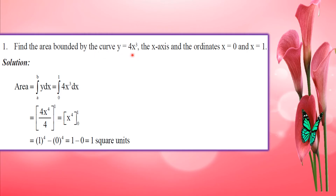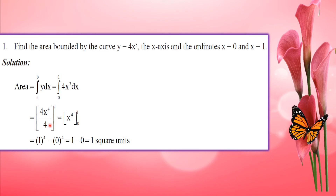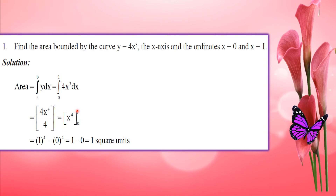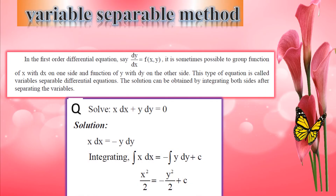Example: area bounded by the curve y equals 4x cubed, the x-axis, and the ordinates x equals 0 and x equals 1. We compute the integral from 0 to 1 of 4x cubed dx. Integrating gives 4 times x raised to 4 by 4, evaluated from 0 to 1, which equals 1 raised to 4 minus 0 raised to 4, equal to 1 square unit.